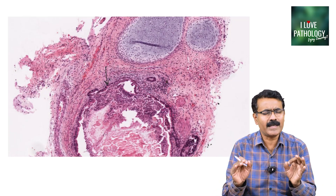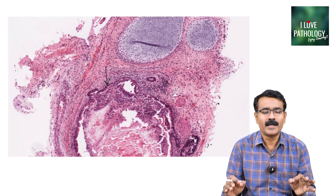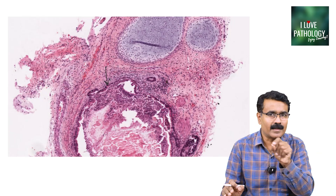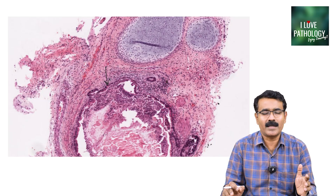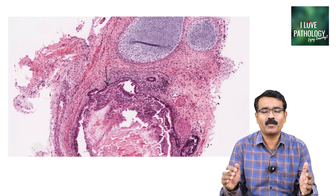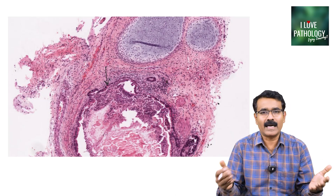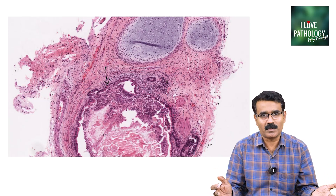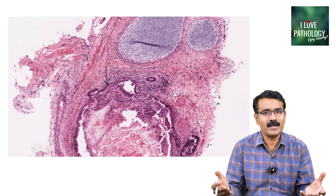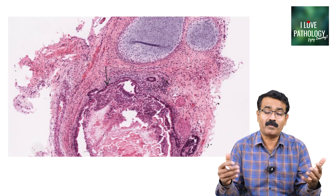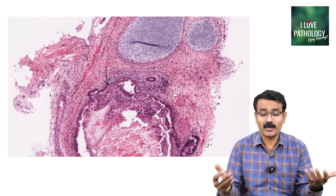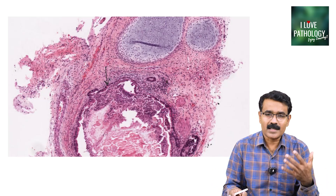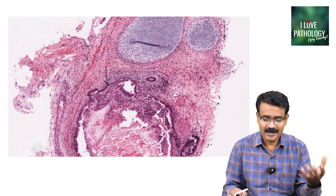Teratomas are very easy to identify. You will find the cyst wall lined by stratified squamous epithelium along with the pilosebaceous unit. Along with that, you find derivatives of endoderm and mesoderm in the form of glands, cartilage, and muscles — sometimes even bone. That is all about teratoma.